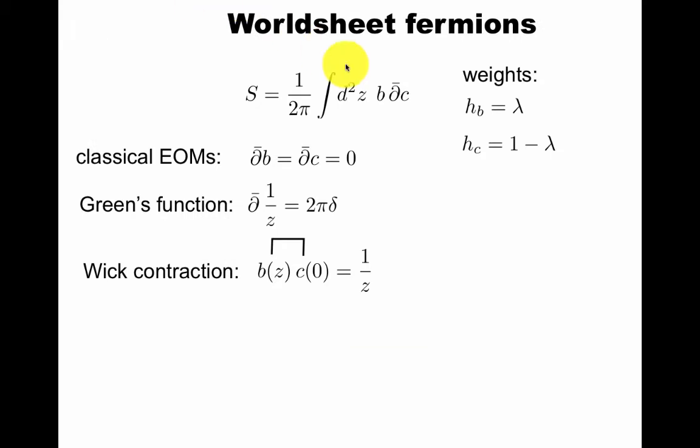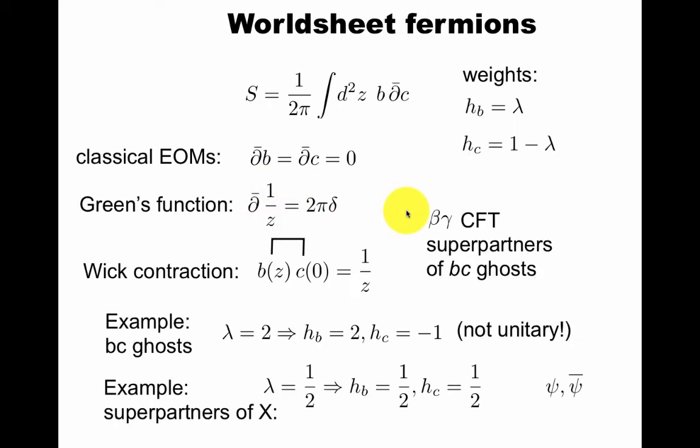Let's consider the worldsheet fermions, b and c. Their weight adds up to one. The classical equations of motion follow from this action. The Green's function to these equations turns out to be one over z. You can check this easily by saying everywhere except zero, this is obviously holomorphic, and at zero, you can do an integral to show that this is actually a delta function times two pi. This means the Wick contraction is in fact this Green's function as we did for the bosons earlier.